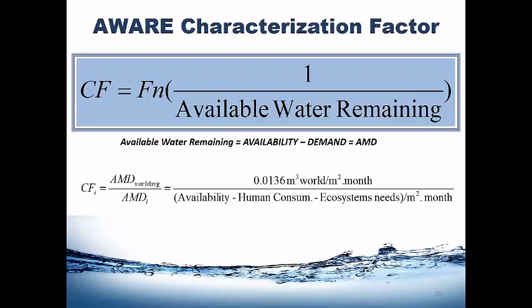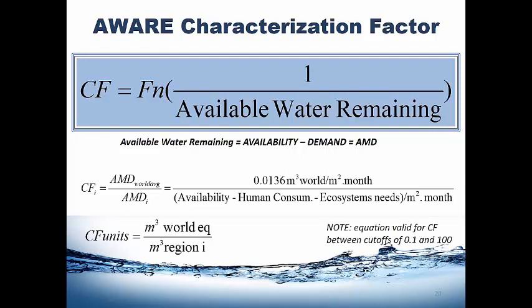The constant in the equation represents the world average of all AMDs for all watersheds and all months in the world — 0.0136 cubic meter world equivalent per meter squared per month. The reason for this was to simplify communication. We could have chosen an Amazon equivalent or Sahara equivalent; we chose the world as more general, but that wouldn't change anything — it's really just a reference, in the same way that CO2 plays the role as reference in the carbon footprint. The units of the characterization factor are therefore cubic meter world equivalent per cubic meter of water consumed in a specific region.